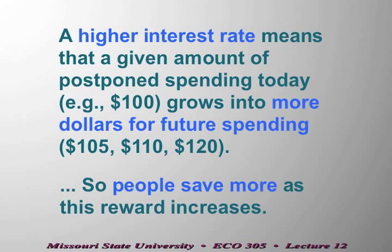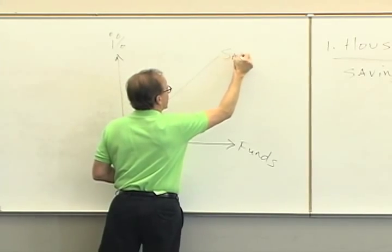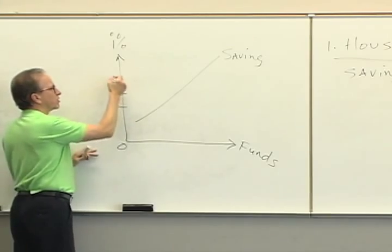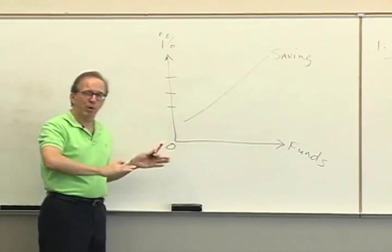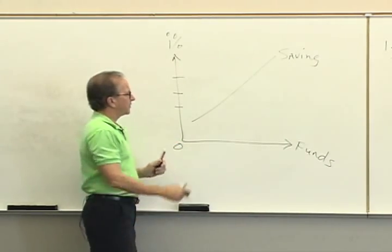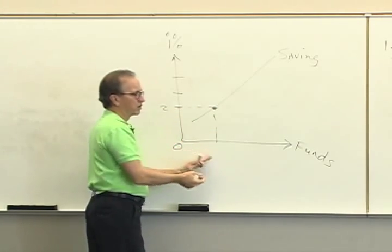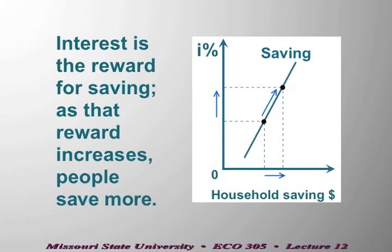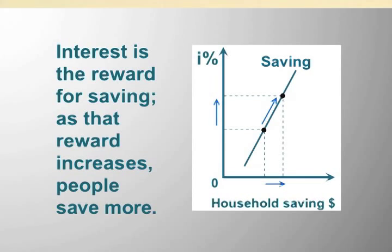Let me draw a graph that goes along with this. We'll measure funds on the horizontal axis — the funds that you have saved — and the interest rate on the vertical axis. As the interest rate goes up, there's a greater and greater reward for postponing spending today. So if the interest rate is 2%, there's just a little bit of saving; if it goes up to 5%, there's considerably more saving; and at 8%, more saving still. We move along this upward-sloping curve, which we'll call saving. These funds go into credit markets.